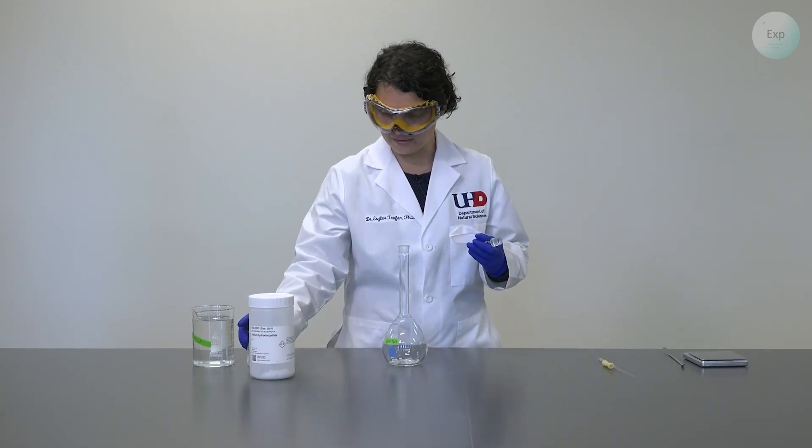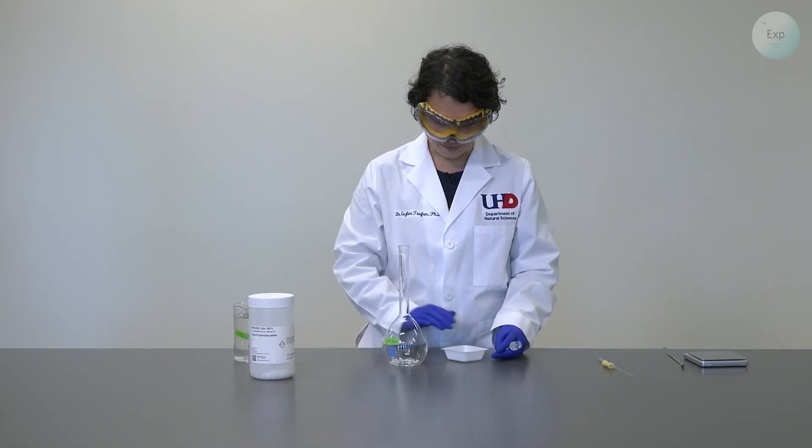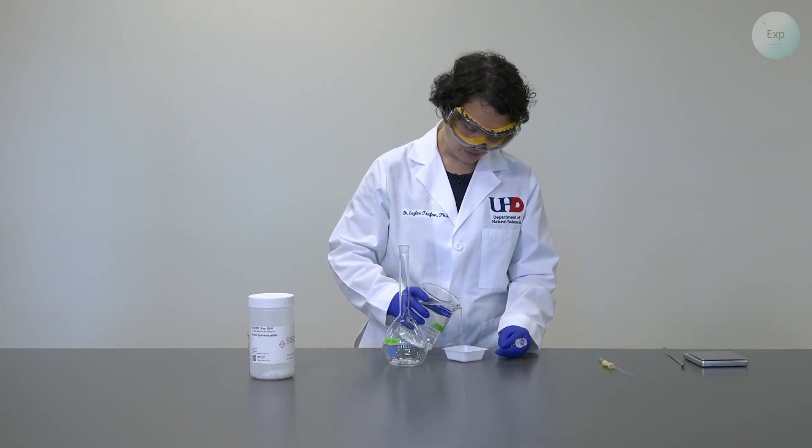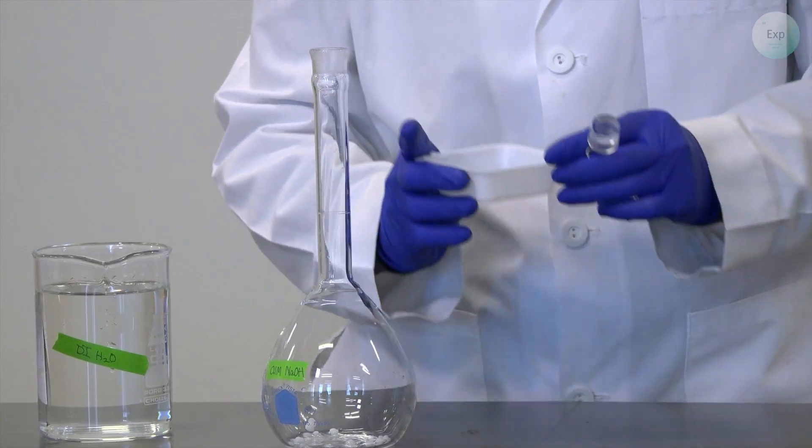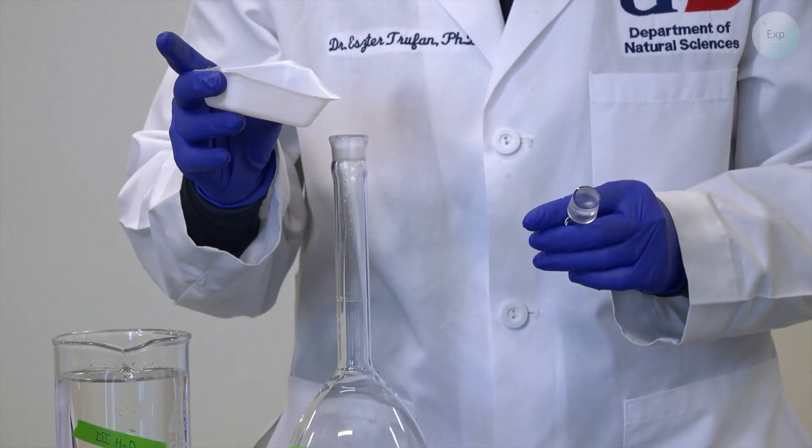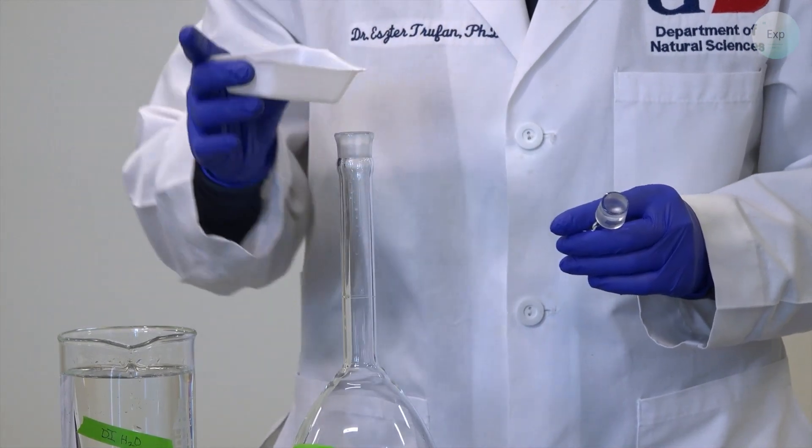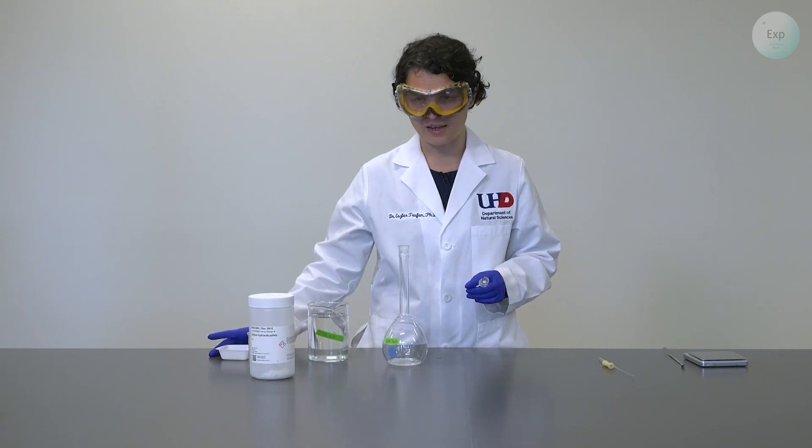Next, I'm going to bring in my deionized water. Because there may be traces of the sodium hydroxide on the weighing boat, I will add a small amount of water to it. This will allow any stuck-on residue to dissolve and transfer into the volumetric flask. My weighing boat is completely clean now, and I can set it aside.